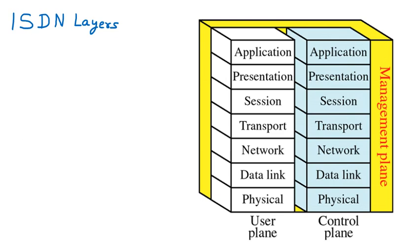We are discussing the ISDN layer. ISDN stands for Integrated Services Digital Network. Whenever we are operating data as well as voice through one line — which is the telephone line — that is called ISDN. There are actually three layers in ISDN.